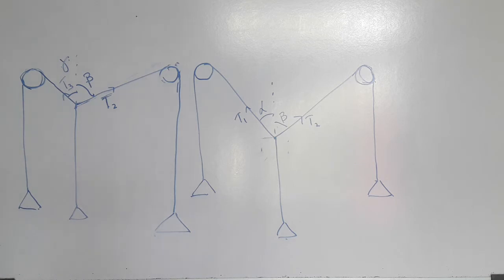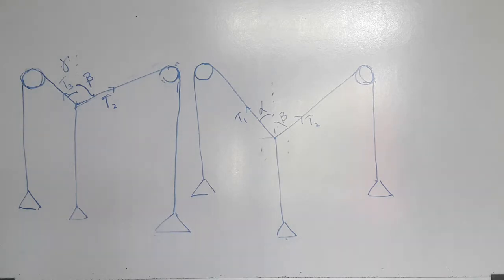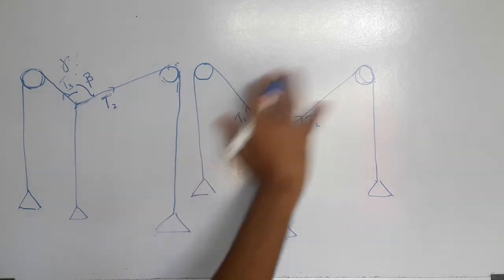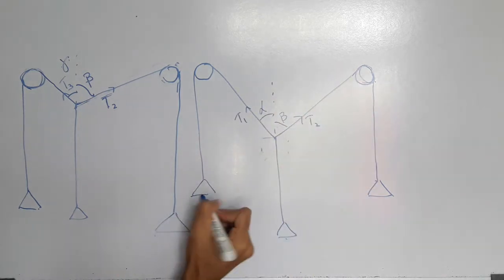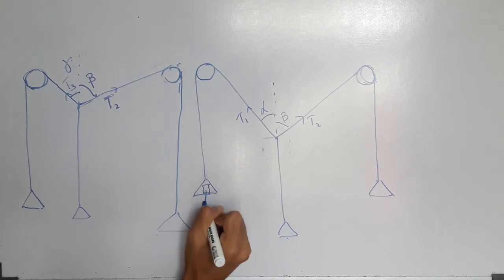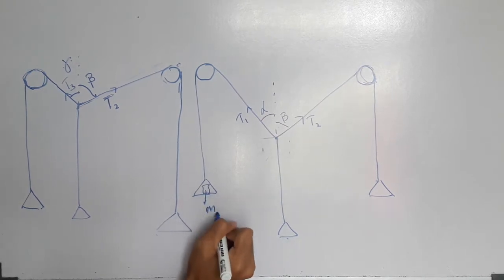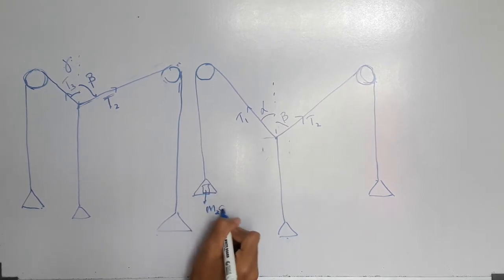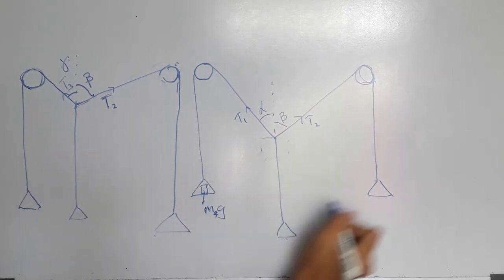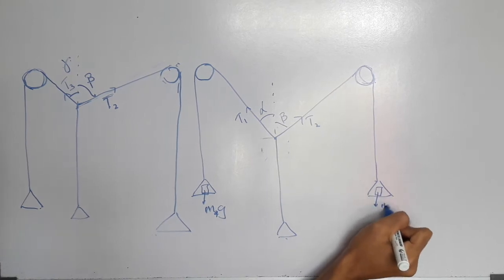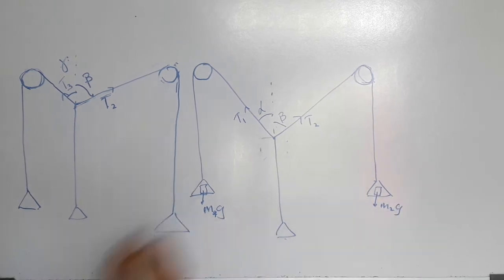Why are they in the first place? Let's see that the people are in the first place. I will tell you that the people are in the first place. Here is the M1 and M2. M1 and M2 are in the first place.